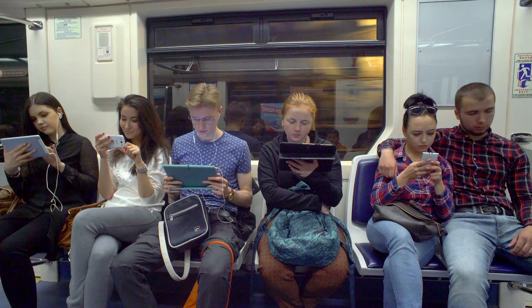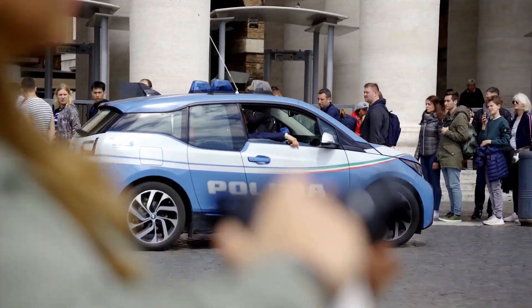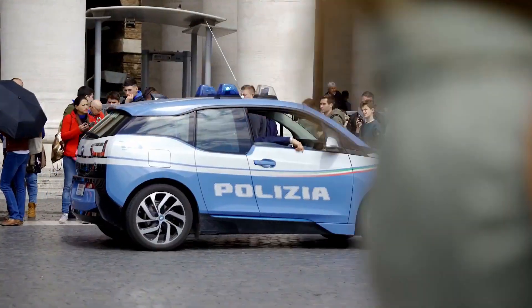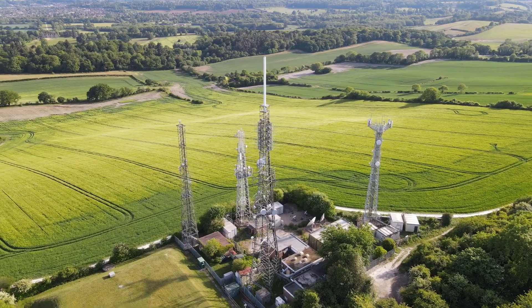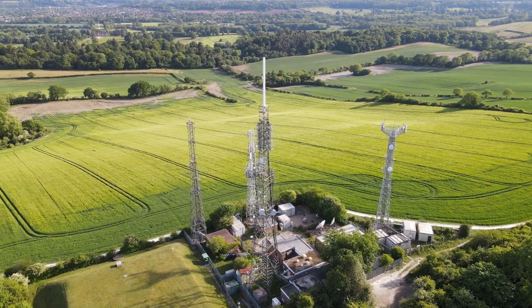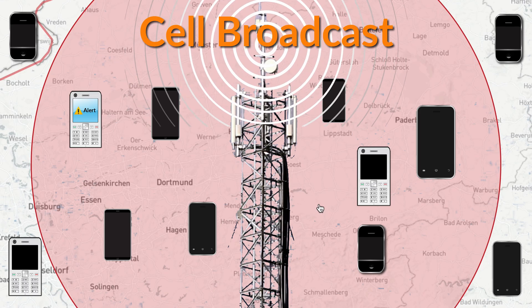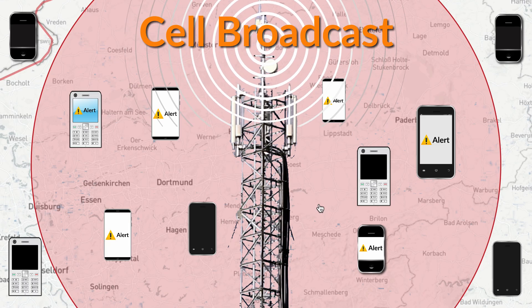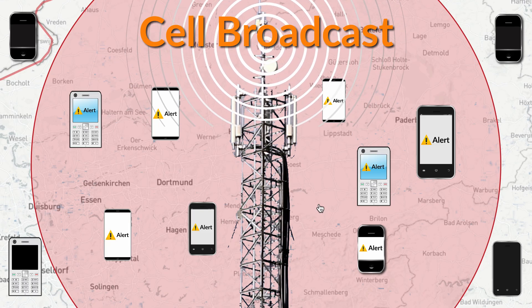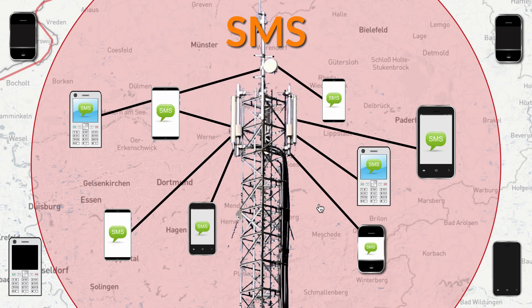Mobile phones are the most efficient way to communicate during a critical event. There are two technologies which can be used to send alerts to mobile phones: cell broadcast or SMS, or a combination of both.